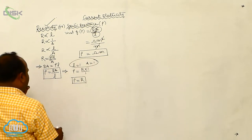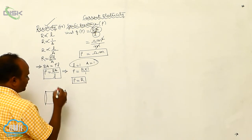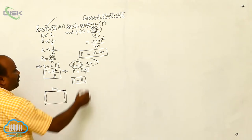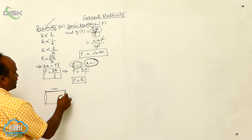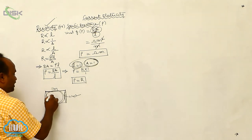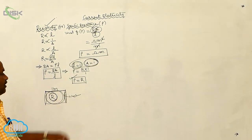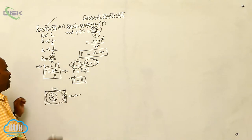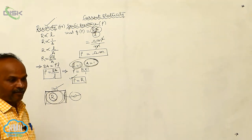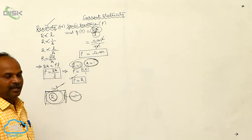From this given data, there is a conductor with a length of one meter and a cross-sectional area of one meter square. This particular conductor has a resistance, and that resistance value is called resistivity. The resistance of a conductor of unit length and unit cross-sectional area is called resistivity.